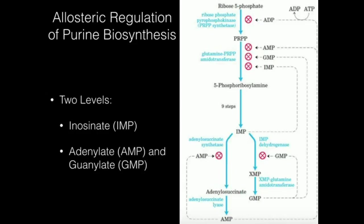It turns out that these two enzymes — PRPP synthetase and PRPP amidotransferase — we regulate those two enzymes mainly because they're at the very start of the pathway. Because if we don't want to go into purine synthesis, then we need to allosterically inhibit both these enzymes to prevent purine synthesis from even starting.